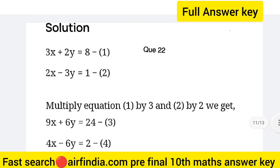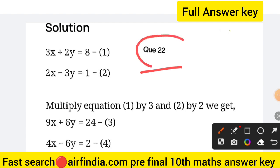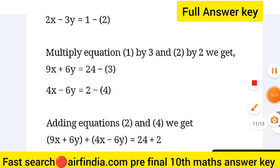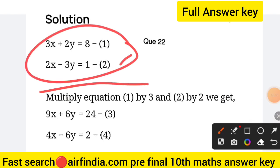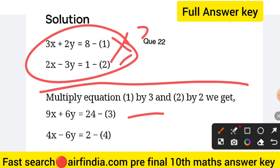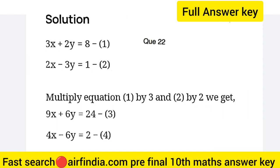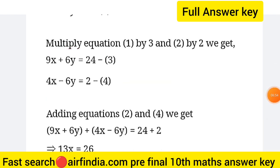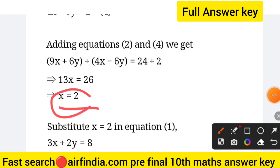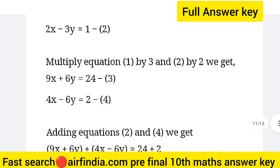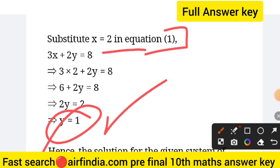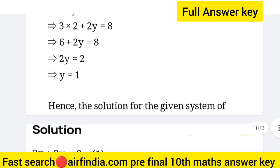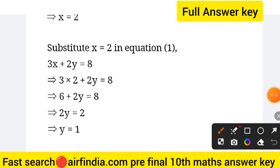Question 22: given 3x plus 2 equals 8 minus 1, and 2x minus 3 equals 1 minus 2. Multiply equation 1 by 3 and equation 2 by 2. Adding equations 3 and 4, we get the value of x equals 2. Substitute x equals 2 into equation 1, and the value of y comes to 1. Hence the solution of the given system is x equals 2 and y equals 1.